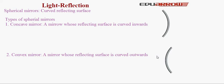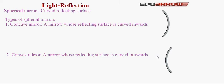Let us now discuss the terminology of spherical mirrors. First is pole. The center of the reflecting surface is known as pole. It is denoted by P and lies on the reflecting surface. In case of concave mirror, this point P is the pole. In case of convex mirror, this is also the pole.